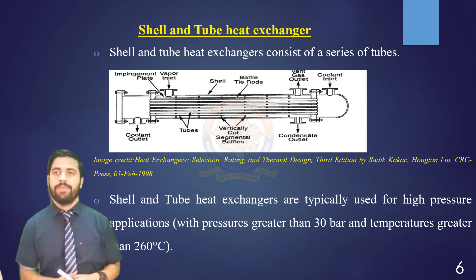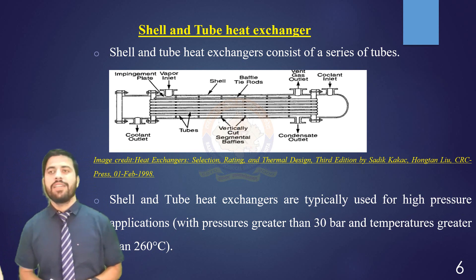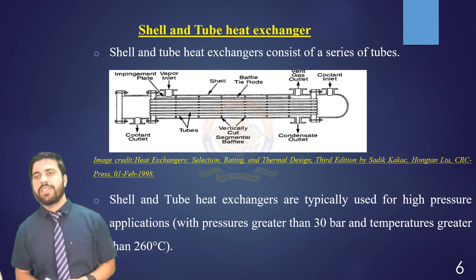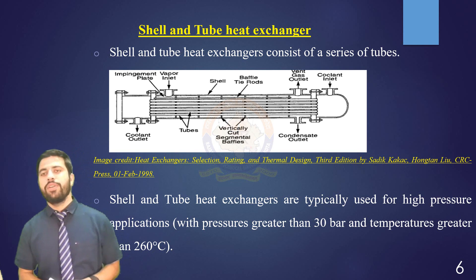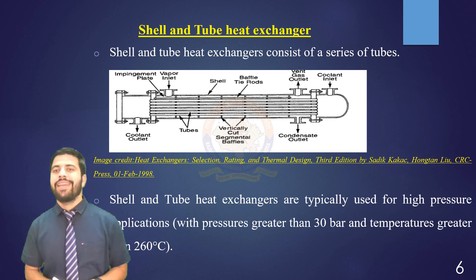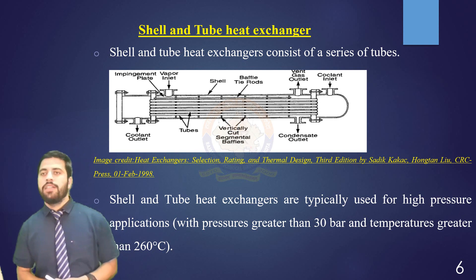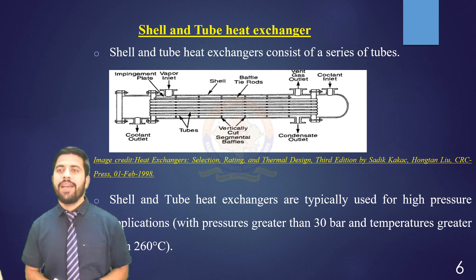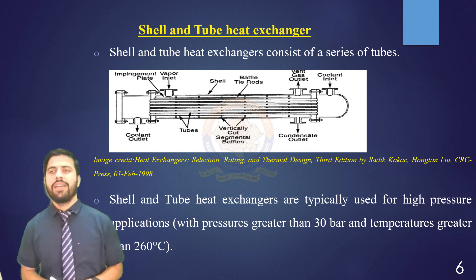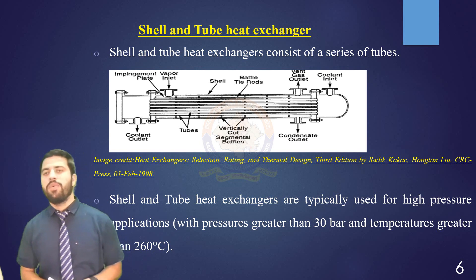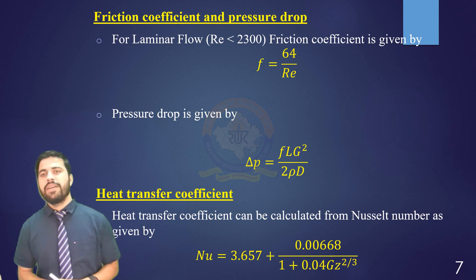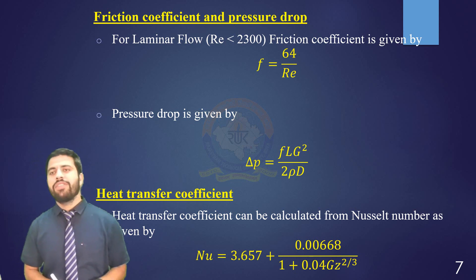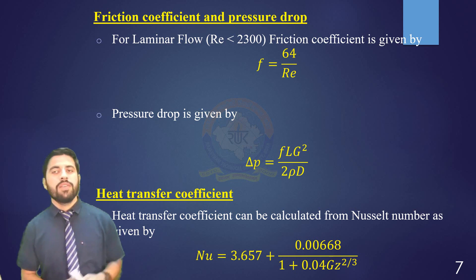The next type is the shell and tube heat exchanger. Shell and tube heat exchangers consist of a series of tubes. One set of these tubes contains the fluid that must be either heated or cooled. The second fluid runs over the tubes to either provide or absorb the required heat. Shell and tube heat exchangers are typically used for high pressure applications, with pressures greater than 30 bar and temperatures greater than 260 degrees Celsius, because they are robust due to their shape. In these heat exchangers, performance parameters like friction coefficient, pressure drop, and heat transfer coefficients can be calculated using the following equations.